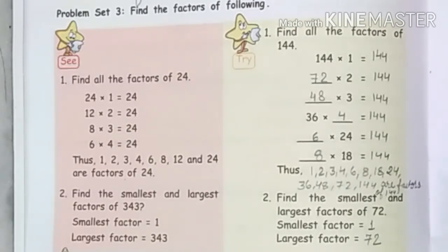Now, whenever you ask the largest factor, it's the number itself. So what will be the largest factor? It is 25. The smallest factor will be 1. Okay?